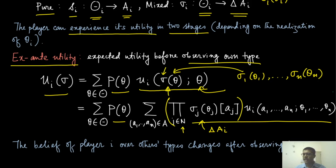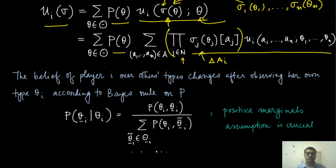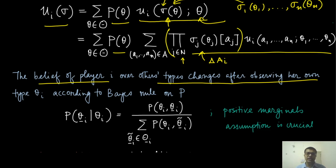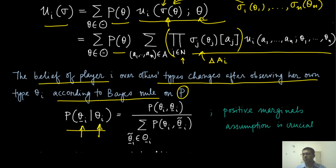After that, you take the expectation with respect to theta. One crucial assumption here is that the belief of player i over others' types changes after observing her own type. The moment you observe theta_i, it also gives you some information about the thetas for the other players. That happens in this Bayesian game with respect to Bayes' rule on the common prior P. This is just rewriting Bayes' rule — you look at your own type and then have a perhaps changed probability distribution over theta minus i.